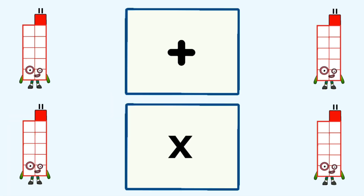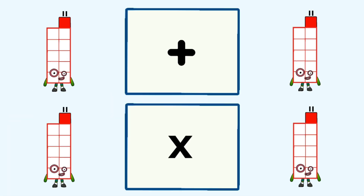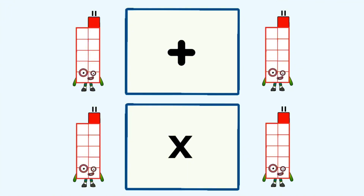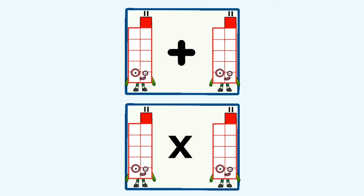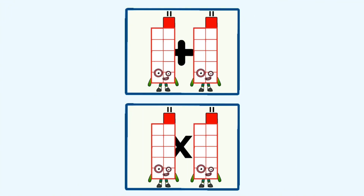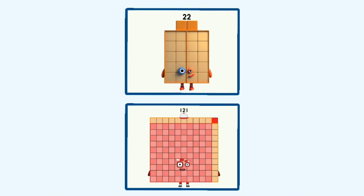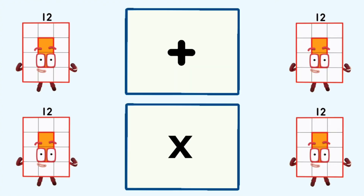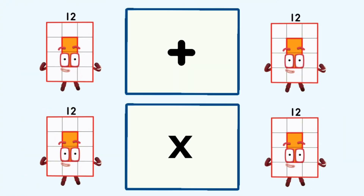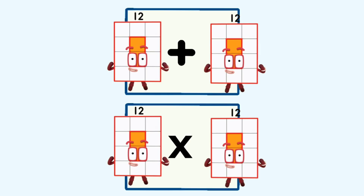11 plus 11 and 11 times 11 equals 22 and 121.